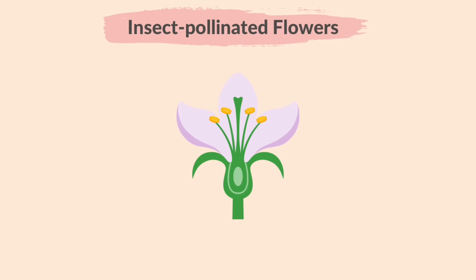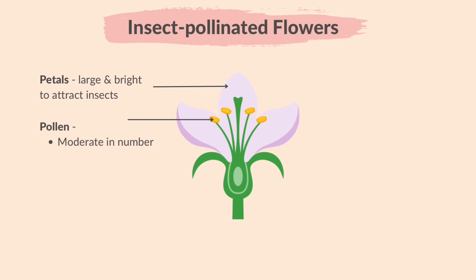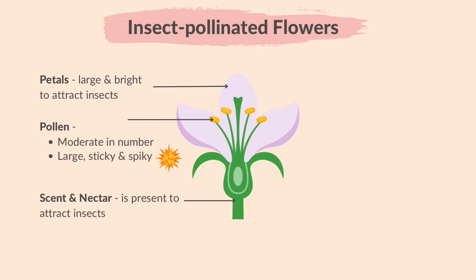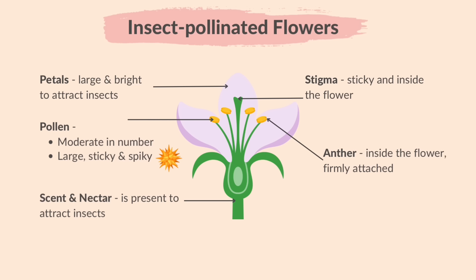These are the structural adaptations of an insect-pollinated flower: petals are large and bright to attract insects; the amount of pollen is moderate since insects are more efficient at pollination; pollen grains are large, heavy, sticky, and spiky so they stick to the insect's body; scent and nectar are present to attract insects; the stigma is sticky and located inside the flower; and the anther is inside the flower, firmly attached to brush against insects.